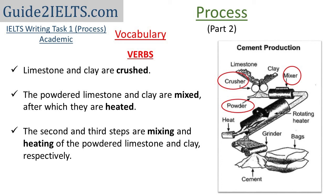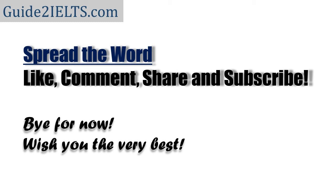In contrast, in the process of cement production, the names of equipment or machines used are mentioned, but we can get an idea of the verbs from these. So, 'limestone and clay are crushed,' 'the powdered limestone and clay are mixed, after which they are heated.' Or 'the second and third steps are mixing and heating of the powdered limestone and clay respectively.' That's it for now regarding the vocabulary to be used when writing about a process. We'll post a couple of sample writings of the process soon. Bye for now from Guide to IELTS.